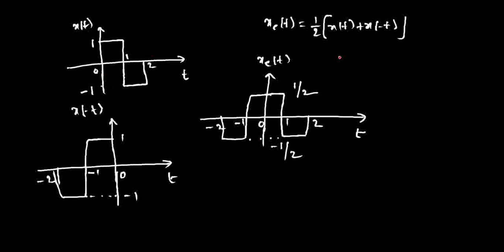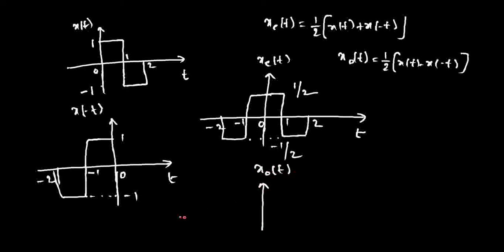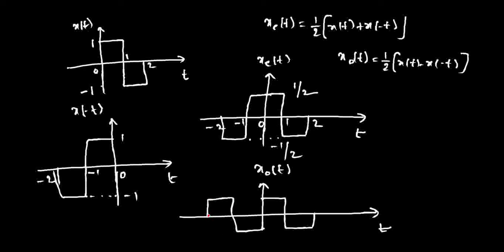For the odd part of this second example, X_o of t equals half of X of t minus X of minus t. First plot minus X of minus t, then add it to X of t and divide by one half. The resulting X_o of t spans from minus 2 to plus 2, with amplitude one half here and minus one half there. This is how we obtain the representations of X_e of t and X_o of t from a given function X of t.